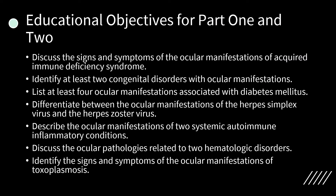The educational objectives for Part 1 and Part 2 are to discuss the signs and symptoms of ocular manifestations of AIDS, identify at least two congenital disorders with ocular manifestations, list at least four ocular manifestations associated with diabetes mellitus, differentiate between ocular manifestations of herpes simplex and herpes zoster, describe ocular manifestations of two systemic autoimmune inflammatory conditions, discuss ocular pathologies related to two hematological disorders, and identify signs and symptoms of ocular manifestations of toxoplasmosis.